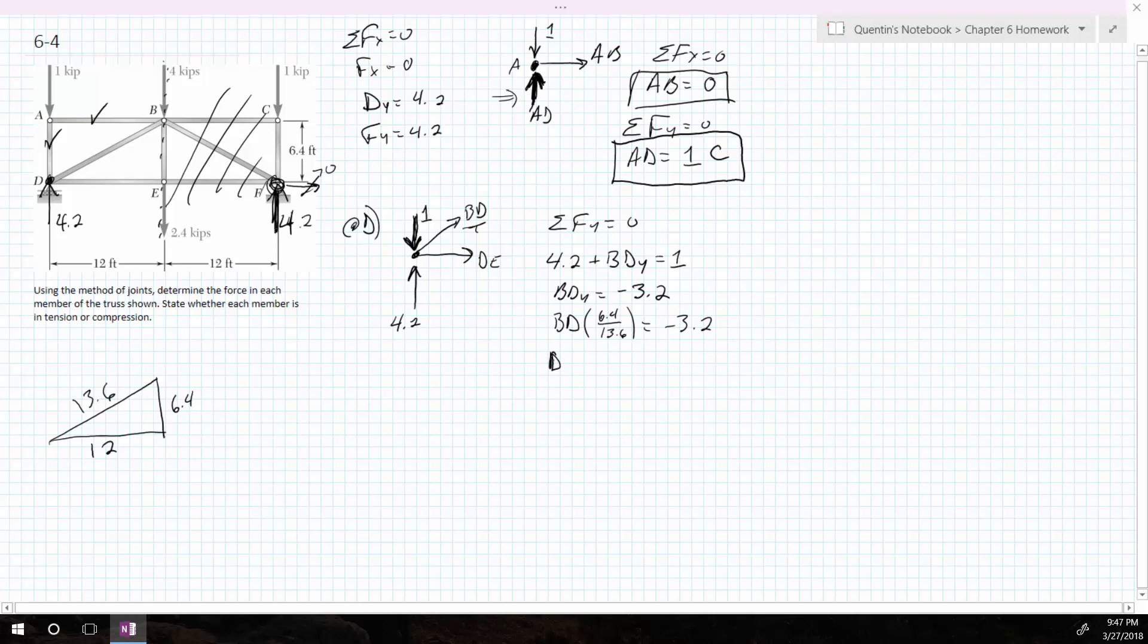So therefore, BD, the Y portion is 6.4 over 13.6 is equal to minus 3.2. So therefore, BD is equal to 6.8. And it's going to be a negative in there. But I don't want negative numbers.